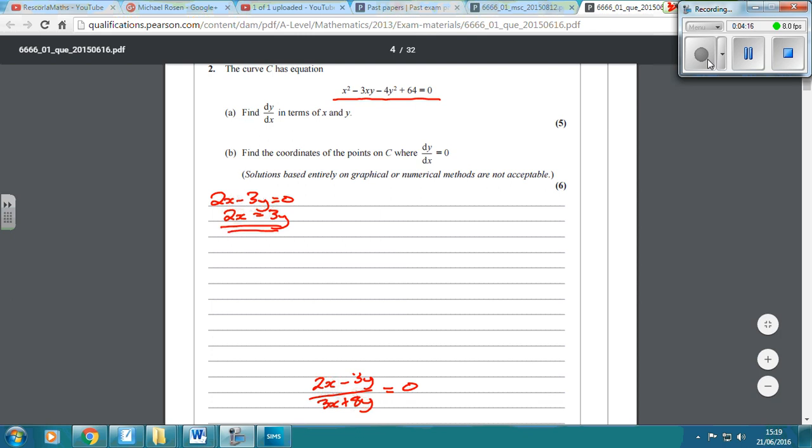You're going to substitute it back in to our original equation. So we've got x squared minus 3xy minus 4y squared plus 64 equals 0. And now what we're going to do is we're going to somehow or other rearrange to get x equals y equals and substitute it in. Now, because we've got a negative here and we've got 4 lots of y squared, let's get rid of the x squared instead. So if we rearrange to get x equals 3y over 2 and then substitute that in.